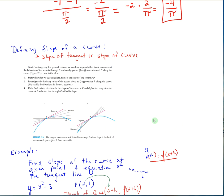That was the average rate of change between two points on a secant line going through a curve. Now if we're talking about the slope of a curve, the slope of the tangent line is the slope of the curve. We need to think about three things: one, start with what you can calculate, namely the slope of the secant PQ. Two, investigate the limiting value of the secant slope as Q approaches P — as Q gets closer and closer to P, we think about that limit. Three, if the limit exists, take it to be the slope of the curve at P and define the tangent to the curve at P to be the line through P with that slope.